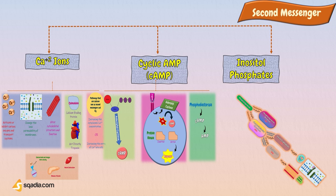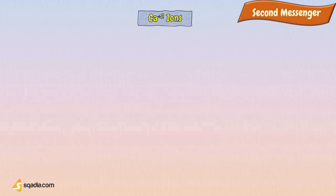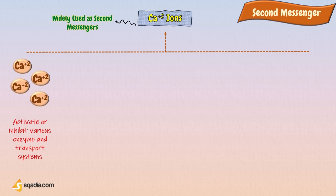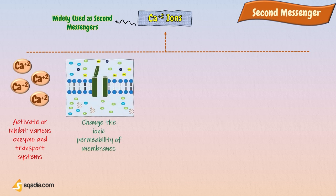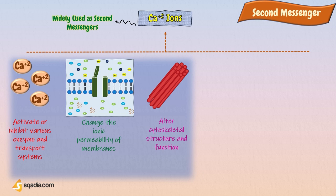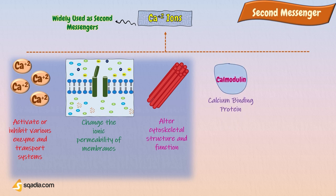Let's look at their details one by one, starting with calcium ions. Calcium ions are widely used as second messengers. Depending on the cell type, calcium ions can activate or inhibit various enzyme and transport systems, change the ionic permeability of membranes, or alter cytoskeletal structure and function. These responses are not brought about by calcium ions directly, but via a calcium ion-binding protein called calmodulin. Calcium may also act directly, for example on troponin.